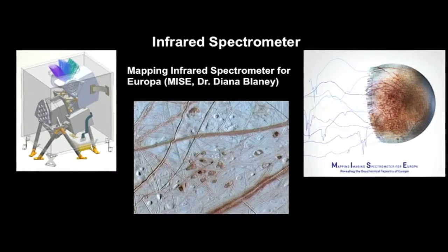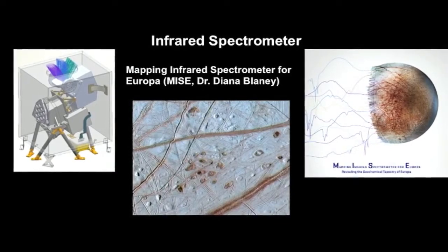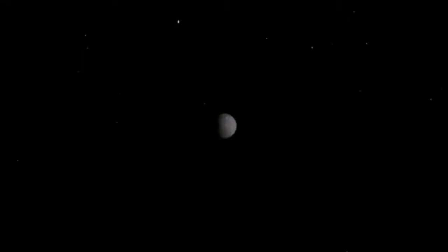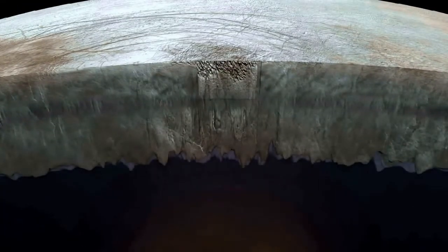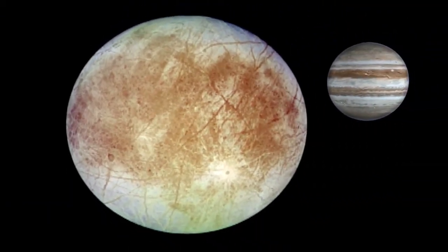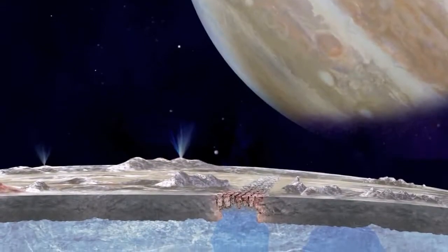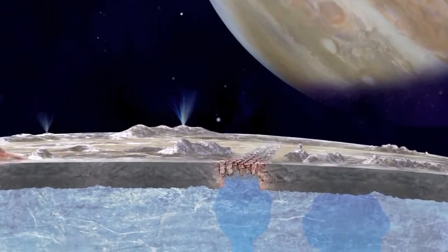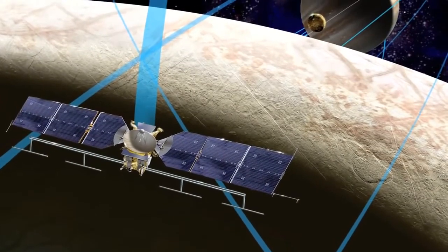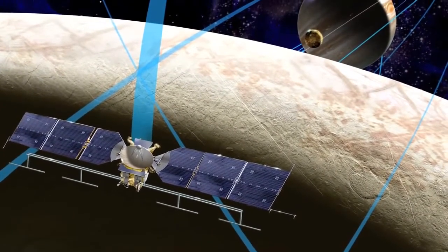The instruments targeted for launch aboard a robotic probe in the 2020s include cameras and spectrometers to collect high-resolution imagery, an ice-penetrating radar to measure surface thickness and look for subsurface lakes, and a magnetometer to measure the strength and direction of the moon's magnetic field and allow scientists to determine the depth and salinity of the moon's ocean. The mission will collect data during a series of close flybys of Europa during a three-year period.